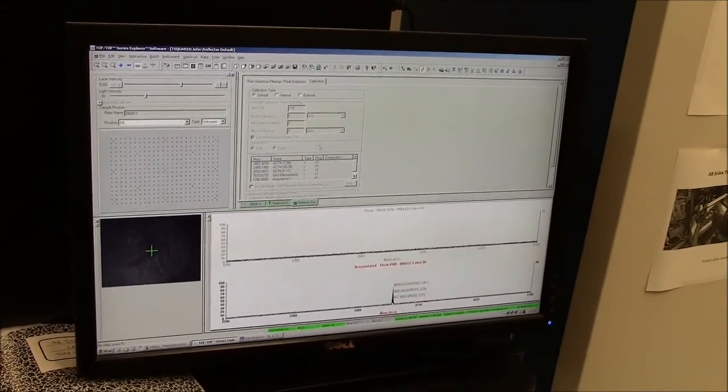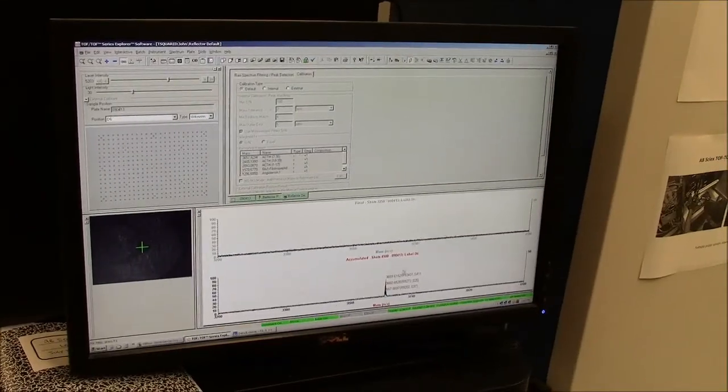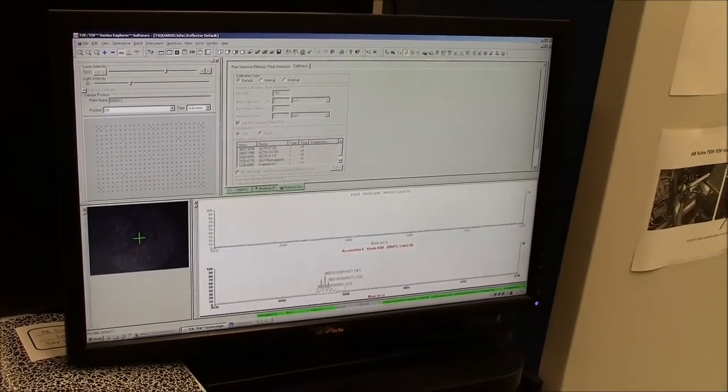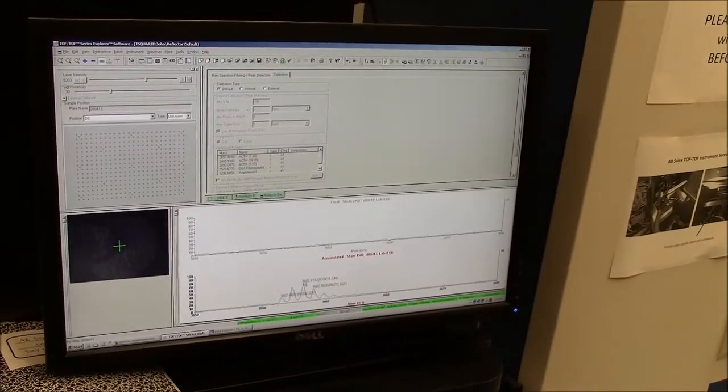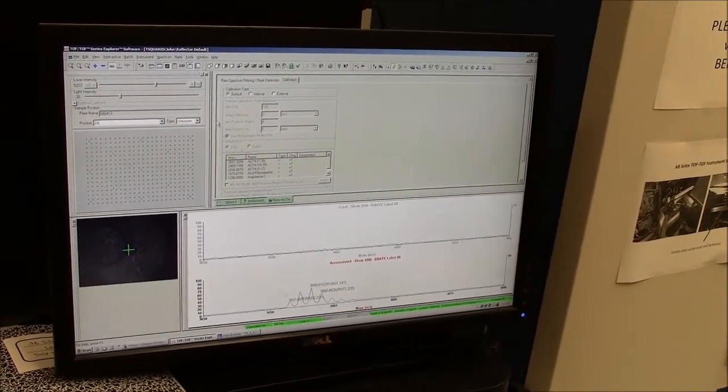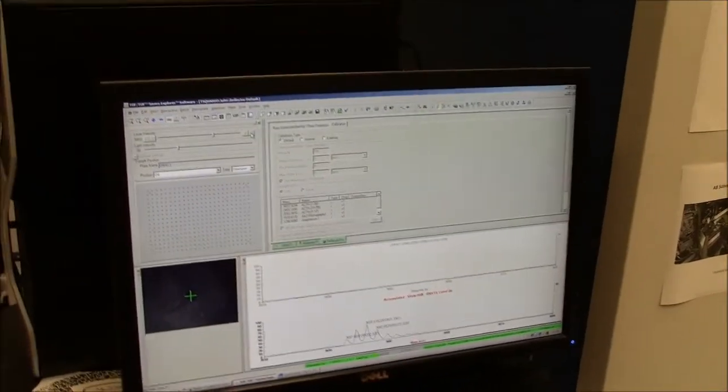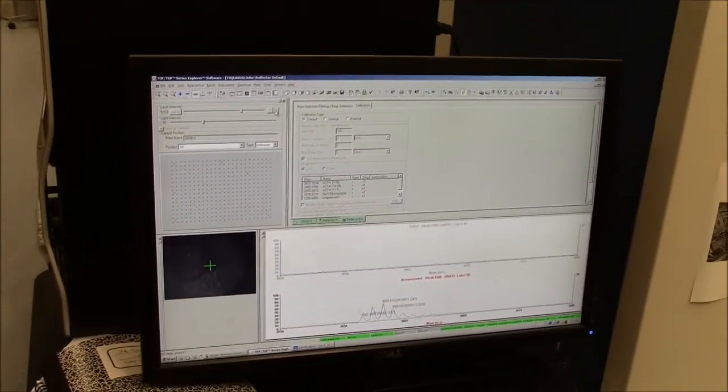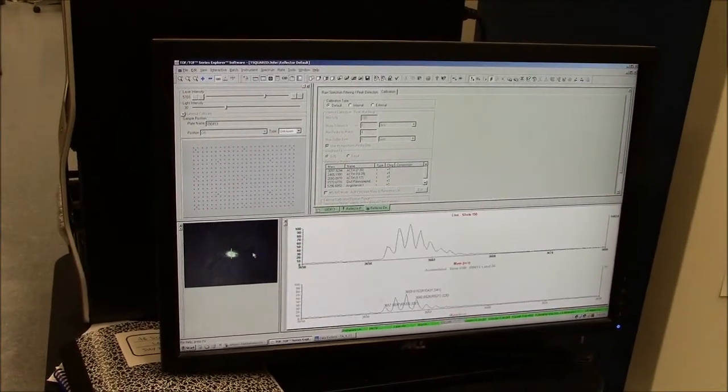So let's look at our largest peak. So this is ACTH clip 7 through 38. You can see that it is isotopically resolved, which is pretty good for a peptide that big, right? So what happens if we put in too much laser power? So let's go ahead, let's go up to like 5,700 laser power. Moderately too high.